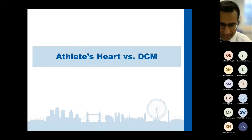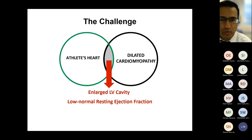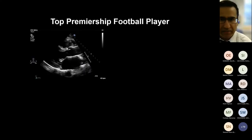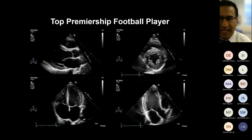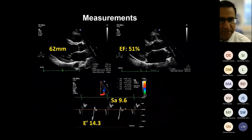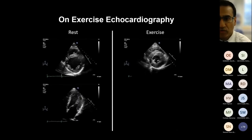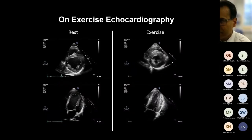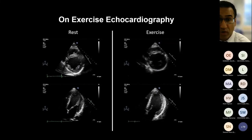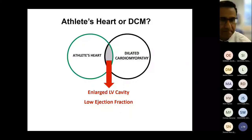Let's look at how athlete's heart may overlap with dilated cardiomyopathy. The dilemma arises when we see an enlarged LV cavity with low normal resting ejection fraction. Here is an example of a top premiership football player: at rest there is chamber enlargement with sluggish LV function, a chamber dilatation of 62 millimetres and EF of around 51 percent. In this situation we can perform an exercise echo — looking for all myocardial segments to start recruiting normally. Studies have suggested that an increase in ejection fraction of 12 percent or more from rest to exercise is strongly suggestive of normal physiology.